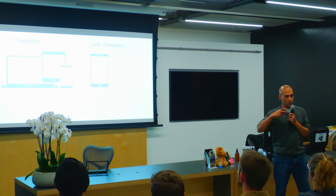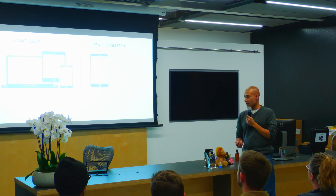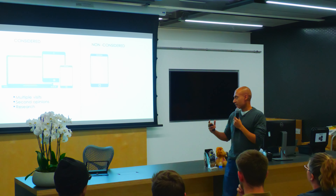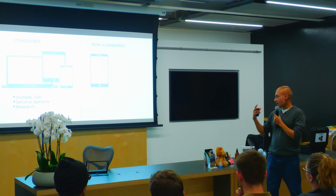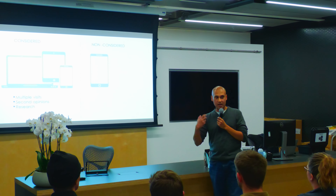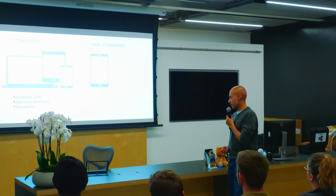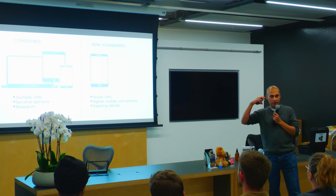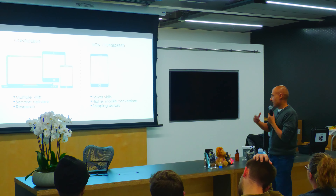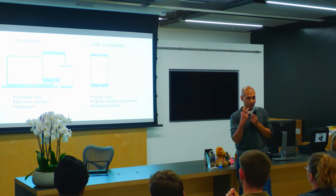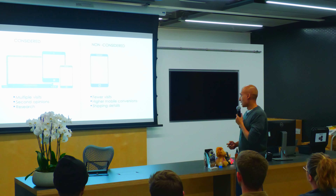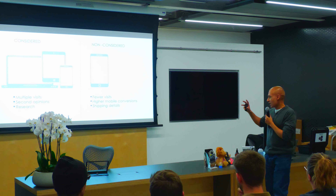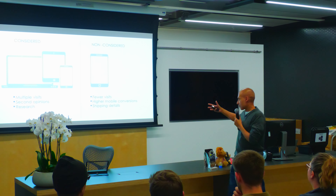So how do you determine whether your product is considered or non-considered? If you see people making multiple visits before purchasing, or going away to do research and get second opinions, that's usually a considered product. For a non-considered product, you'll see fewer visits and higher mobile conversions — if mobile conversions are higher than desktop, that's probably a sign. Also, if people are really focused on shipping details, that's a sign it's non-considered. These things are shifting a bit as browsing habits change.